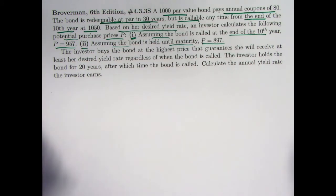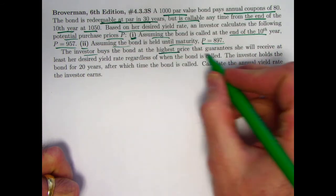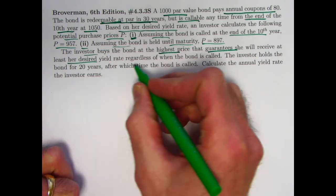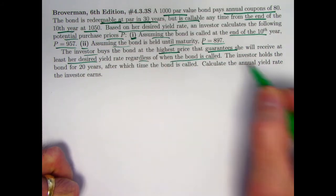Evidently, it must be the case that the yield rates for these two things are the same, or approximately the same. We might want to double check that before we solve the problem. The investor buys the bond at the highest price that guarantees she will receive her desired yield rate, at least her desired yield rate, regardless of when the bond is called.